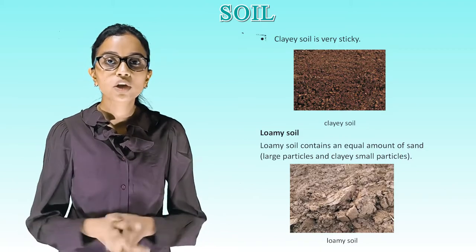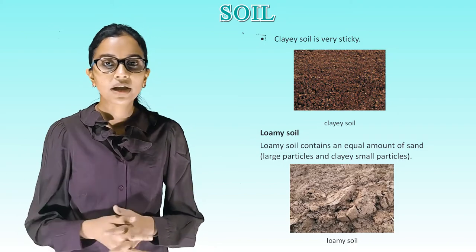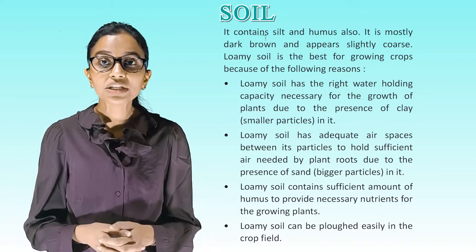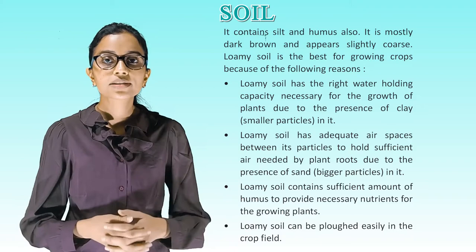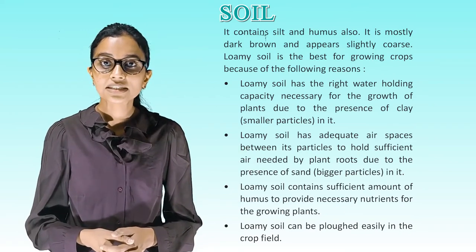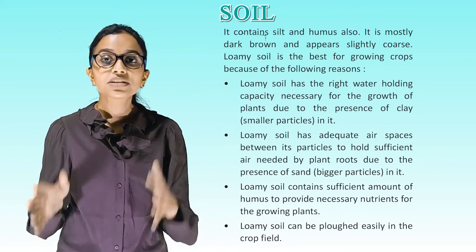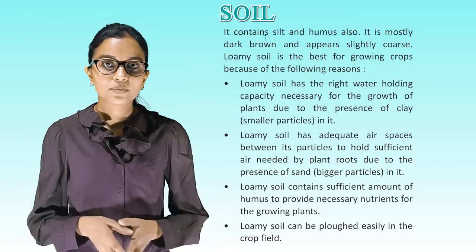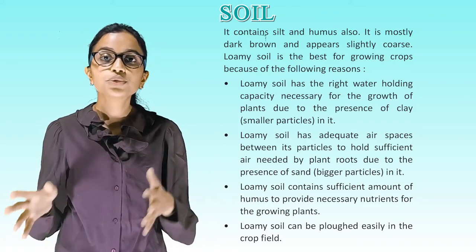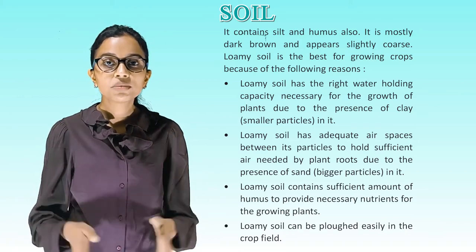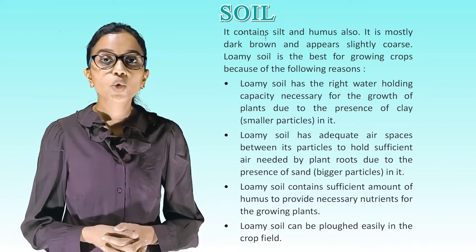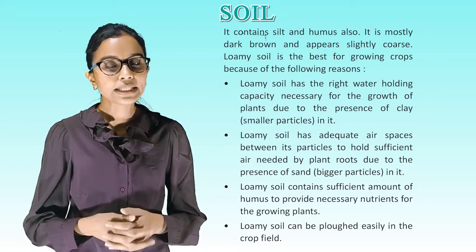Loamy soil contains an equal amount of sand (large particles) and clay (small particles), and also contains silt and humus. It is mostly dark brown and appears slightly coarse. Loamy soil is the best for growing crops because it has good water holding capacity due to clay particles, adequate air spaces for plant roots due to sand particles, and contains sufficient humus to provide necessary nutrients. Loamy soil can also be plowed easily in the crop field.